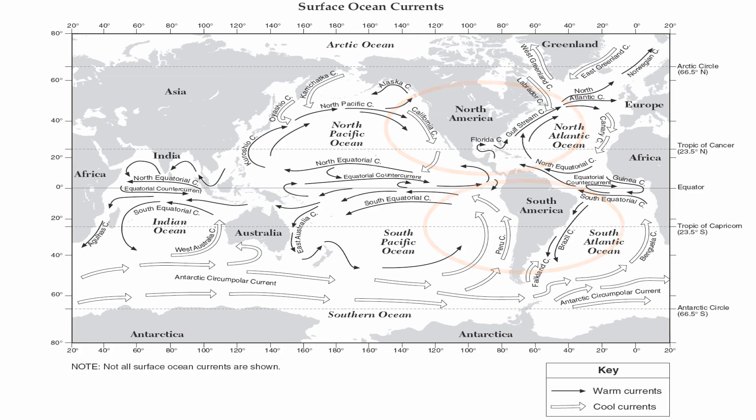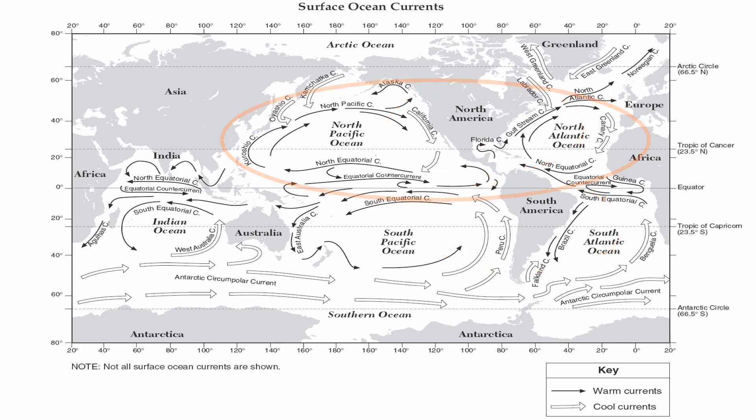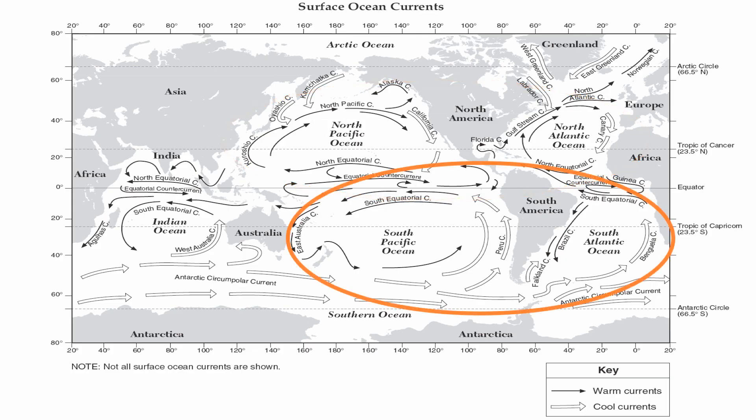If you notice the currents in the northern hemisphere, they are going in a clockwise fashion — they're being deflected to the right. That's what we call the Coriolis effect. In the southern hemisphere, the currents are being deflected to the left, or going counterclockwise. So the Coriolis effect is also being depicted in these maps.